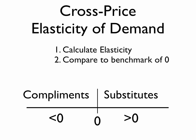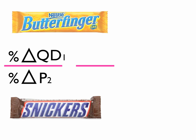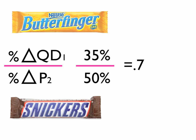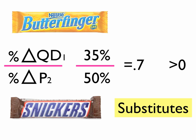Let's take a look at how this might work, using two candy bars: a Snickers bar and a Butterfinger bar. If we increase the price of the Snickers bar by 50% and notice that sales of Butterfinger bars went up by 30%, that gives us a value of 0.7. Comparing that to our benchmark, it is greater than zero — a positive number — so we conclude that those two products are substitutes.